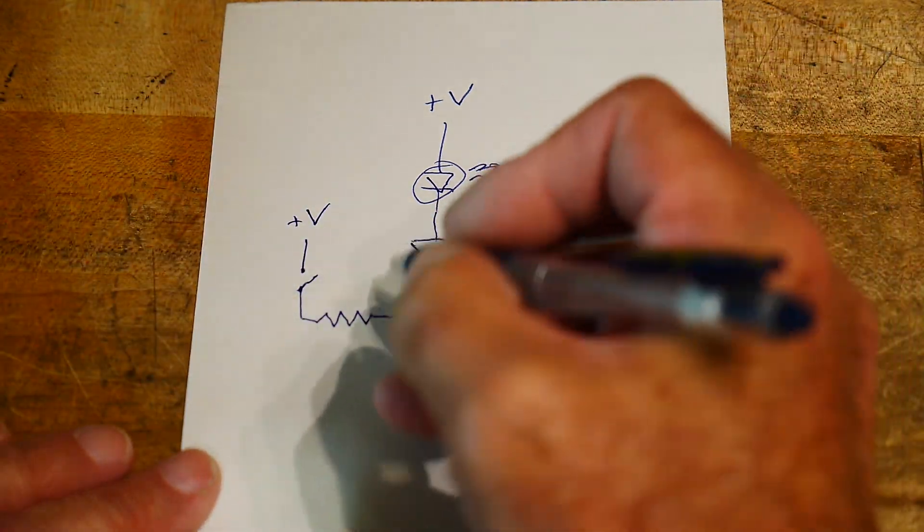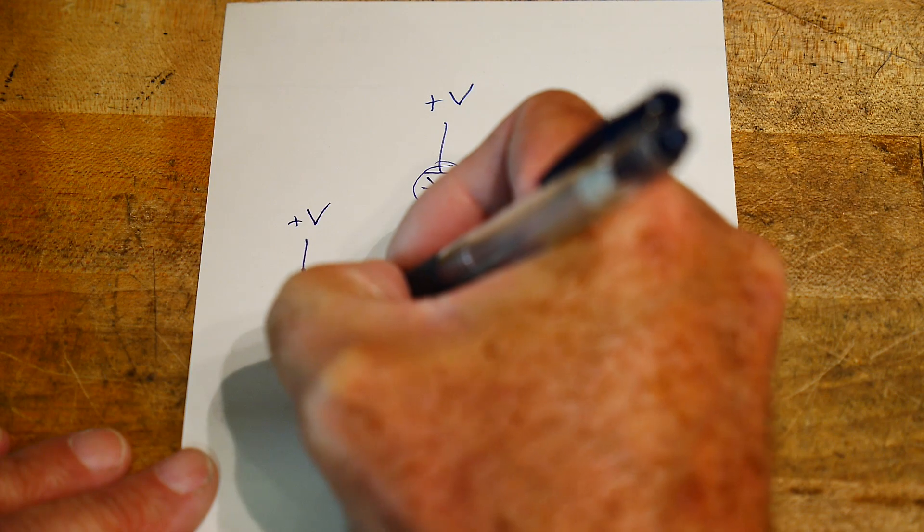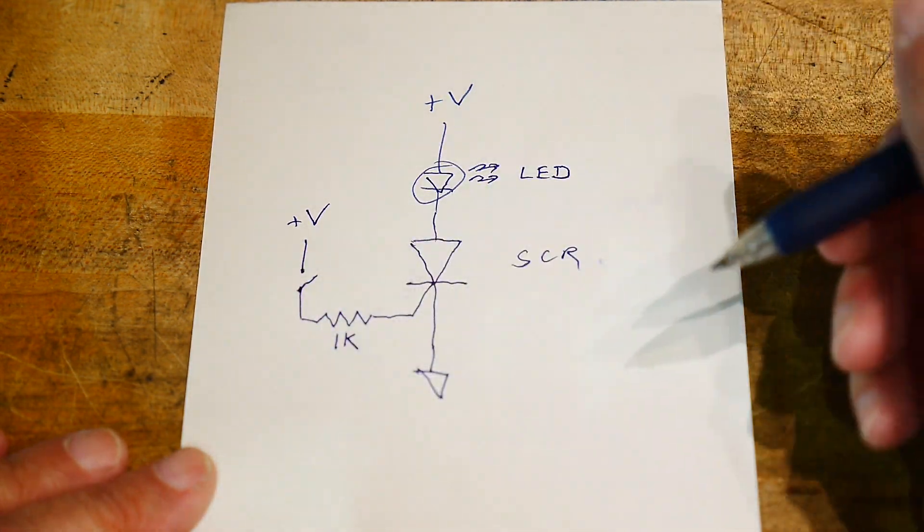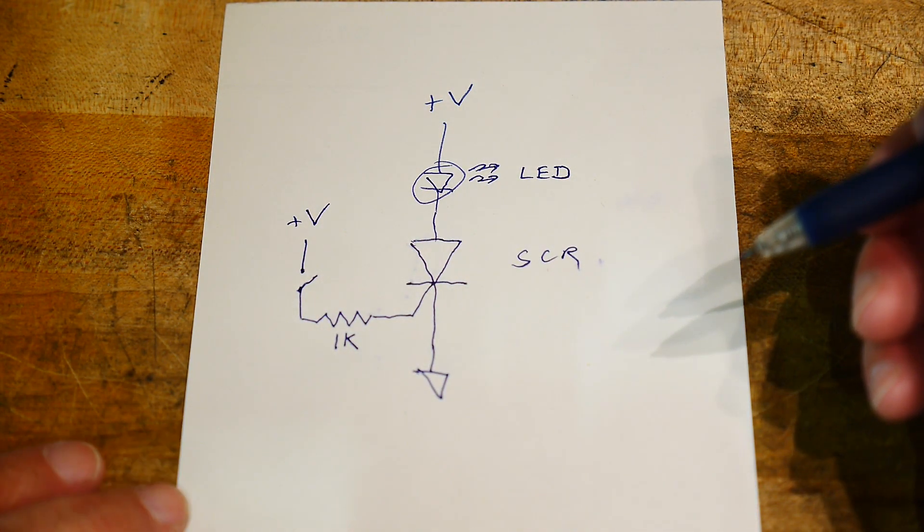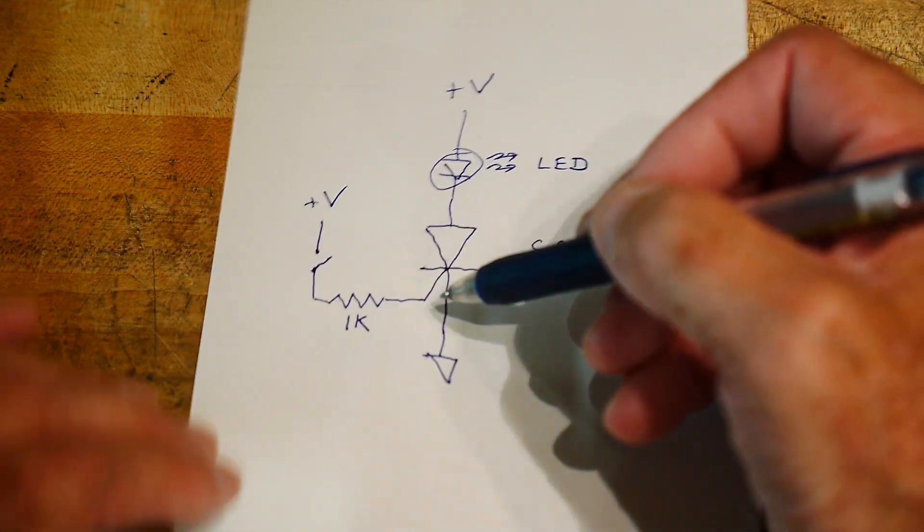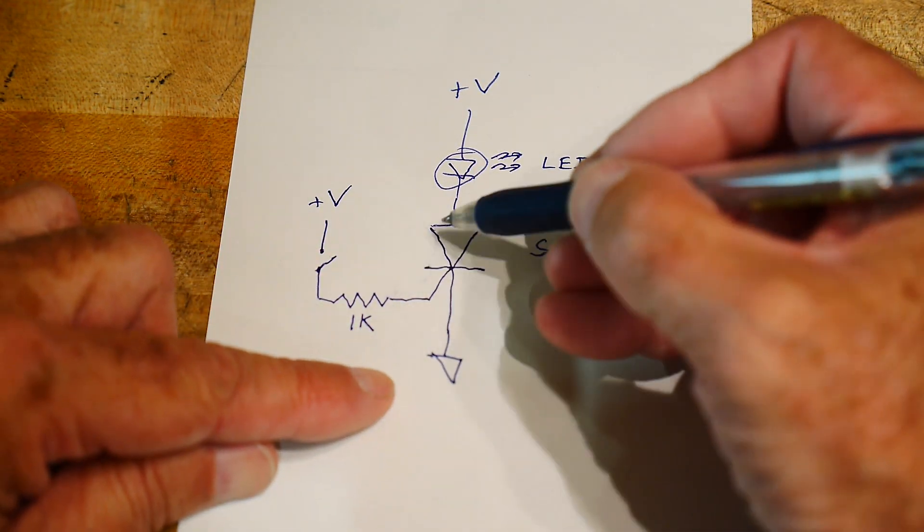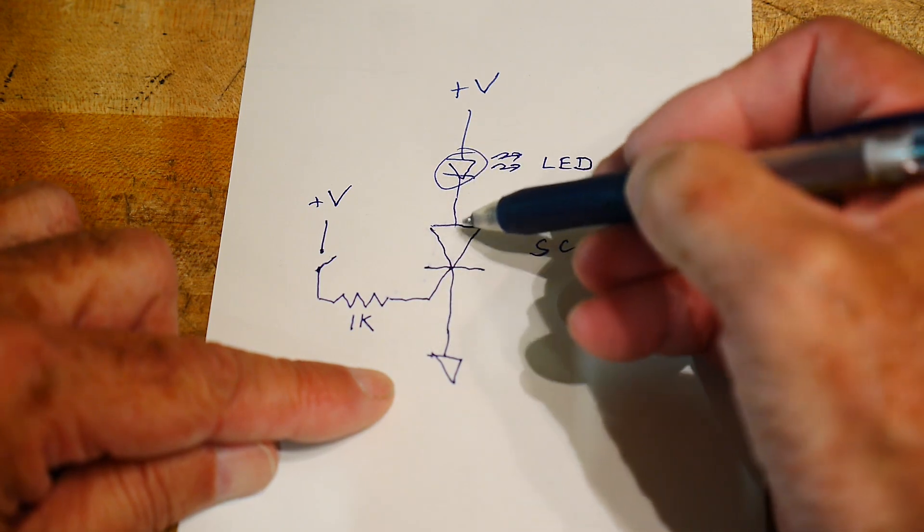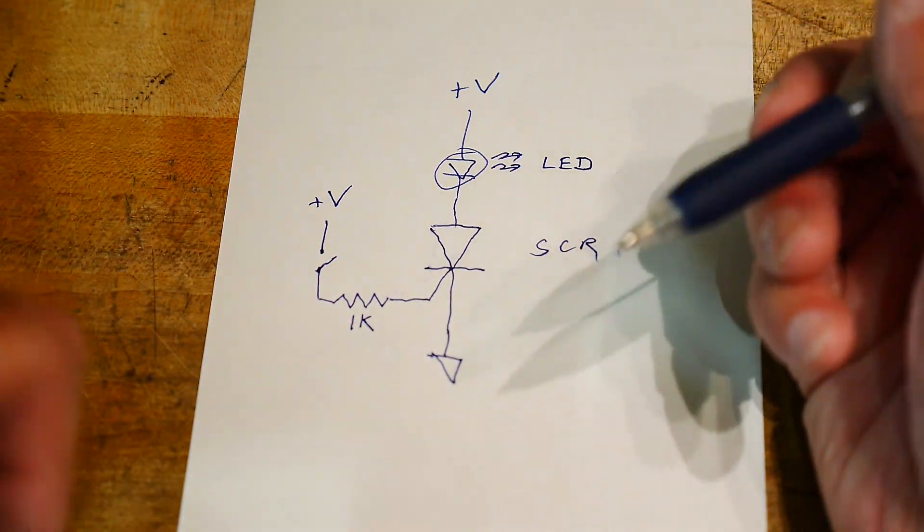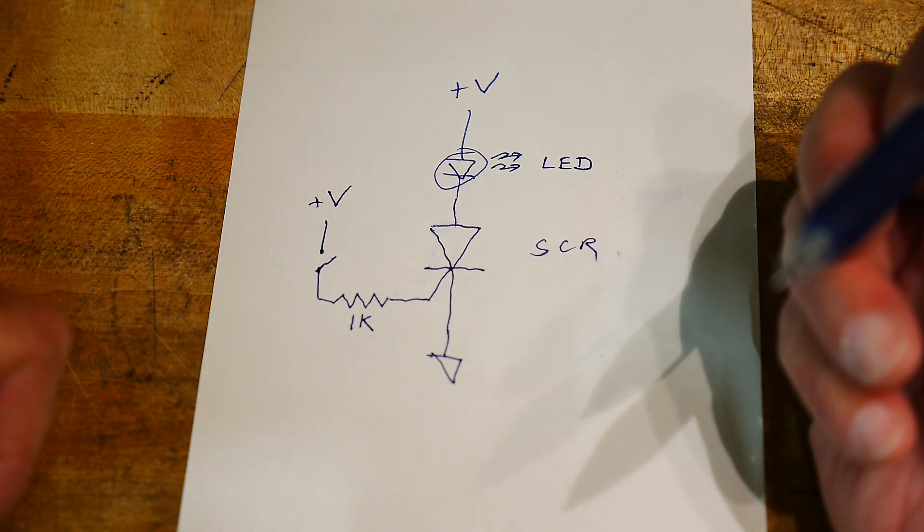And the way it's going to control it is through a resistor, a 1K resistor to plus V. So it seems kind of odd. It seems like if we were going to control this thing, we would pull this down low. And that would cause the current to flow through this thing. So it's not really acting like a transistor, it's acting strangely.